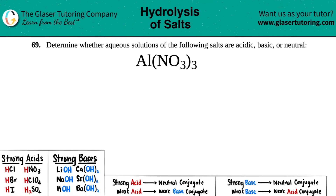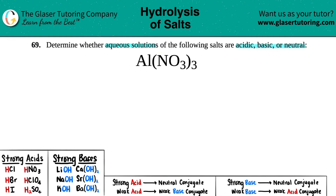Problem 69: determine whether aqueous solutions of the following salts are acidic, basic, or neutral. We have aluminum nitrate, Al(NO₃)₃. Salts are ionic compounds, so they have a metal — in this case aluminum — and a polyatomic ion — in this case nitrate. All we have to do is break this down into its two ions. The split is between the aluminum and the nitrate.